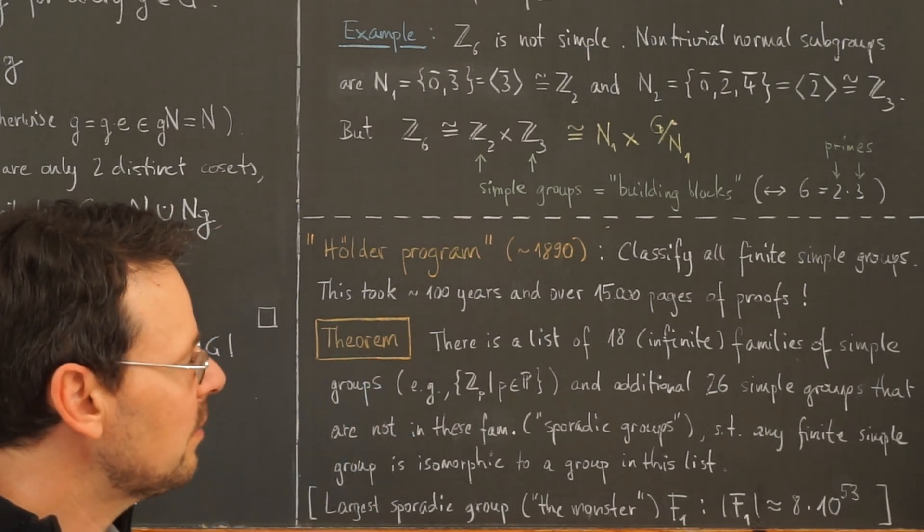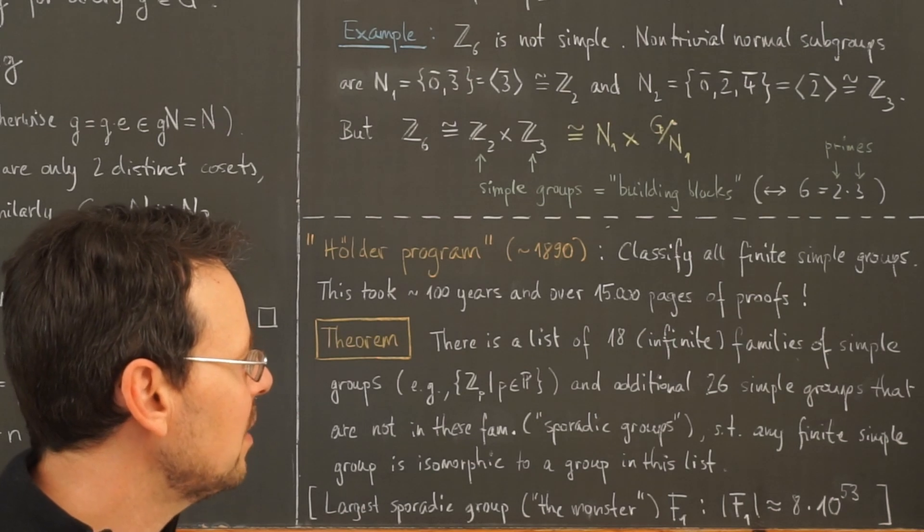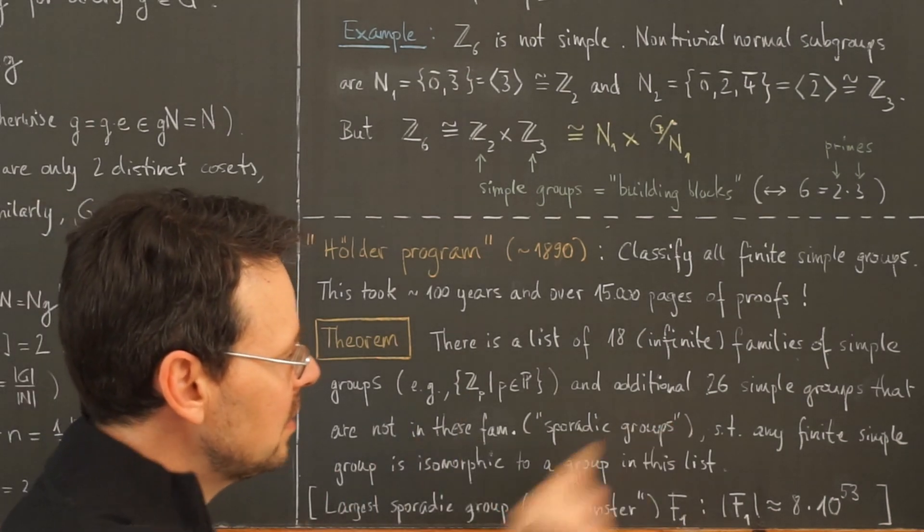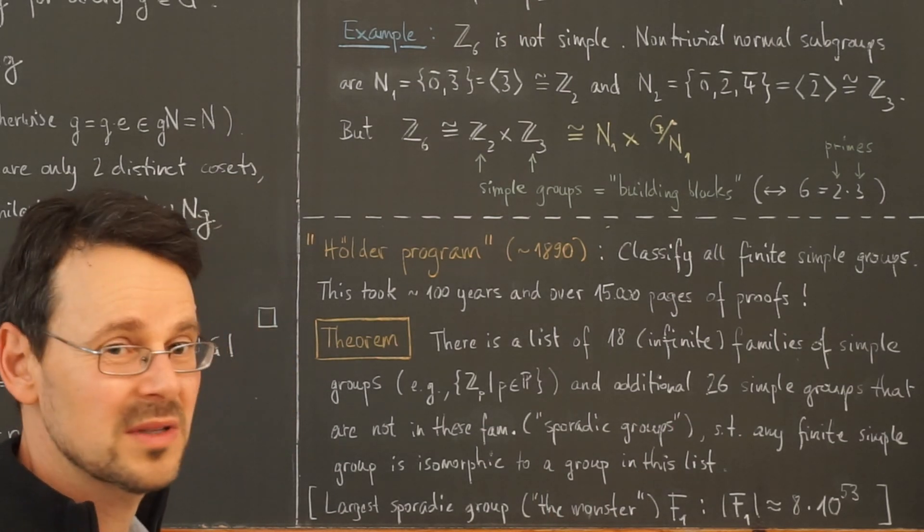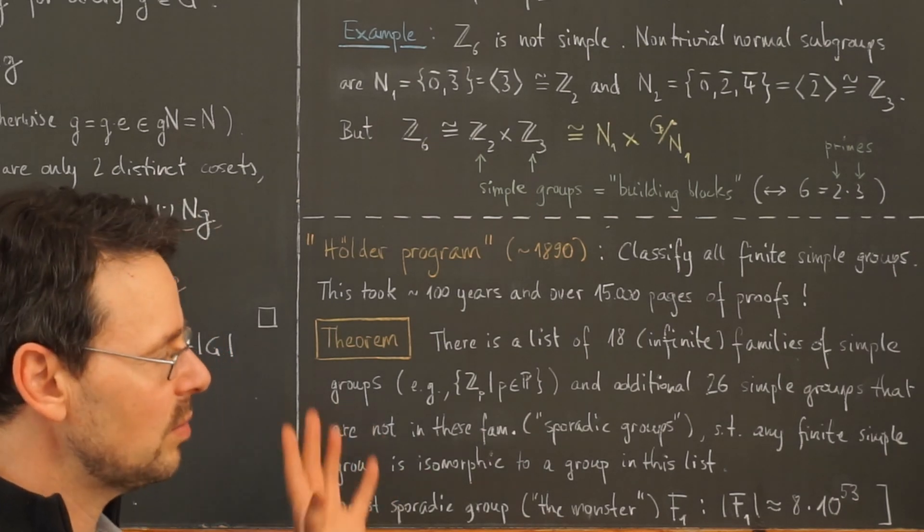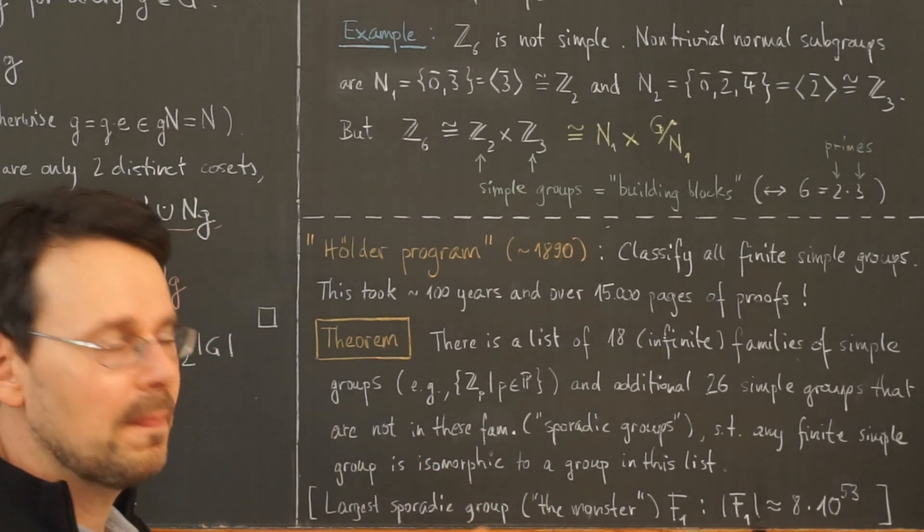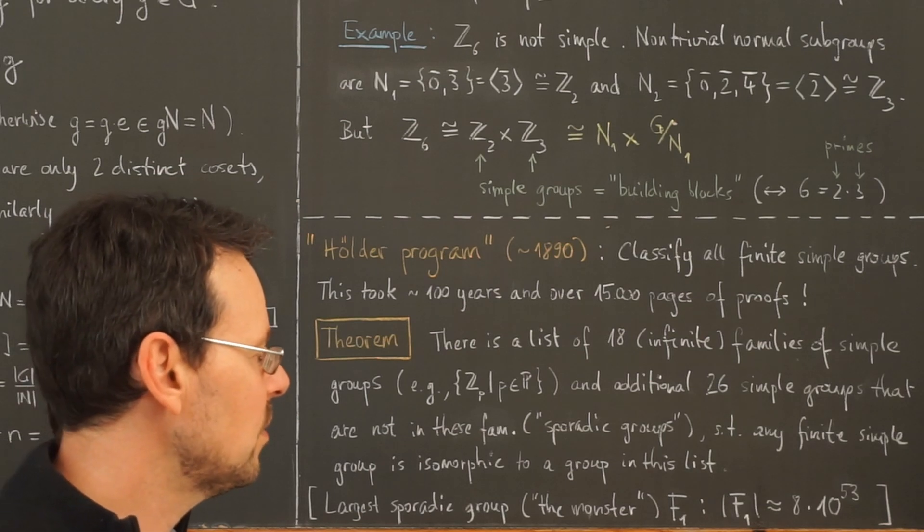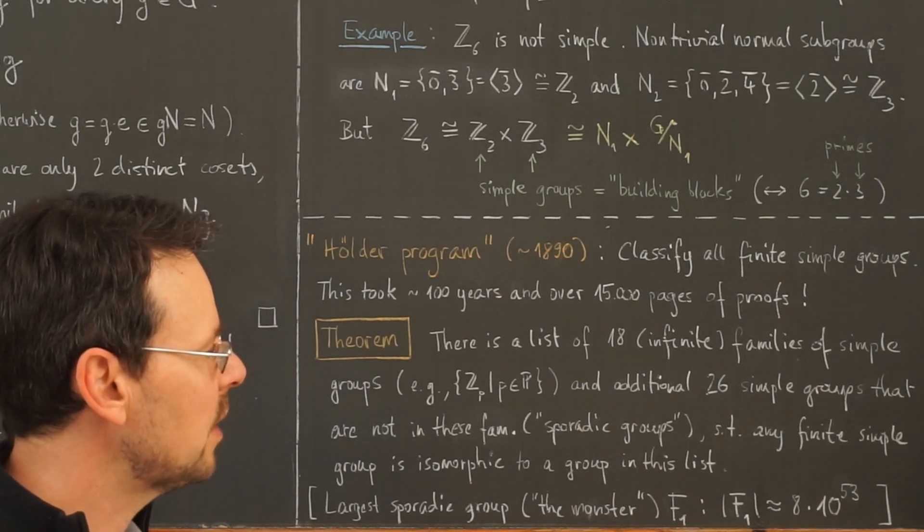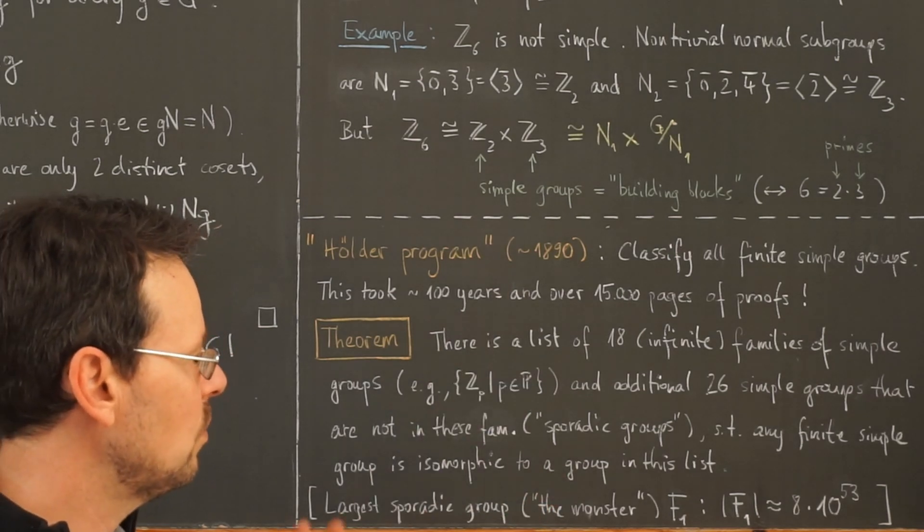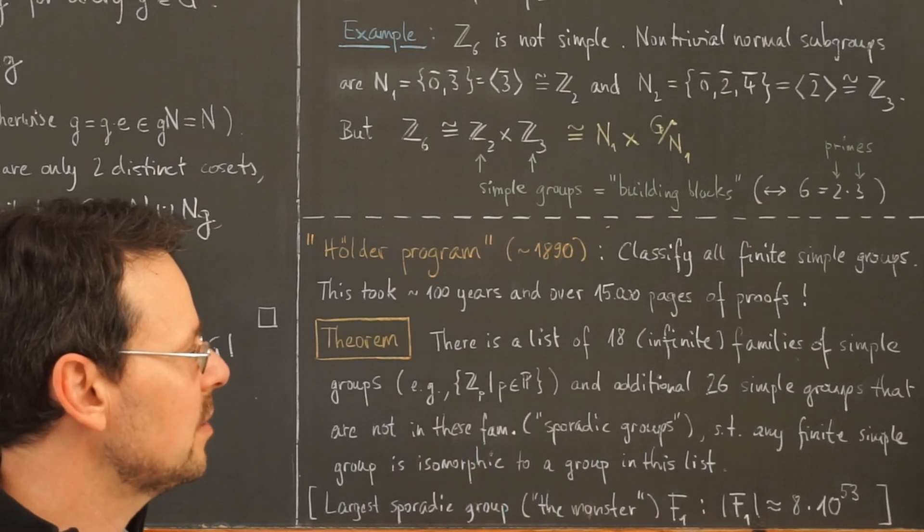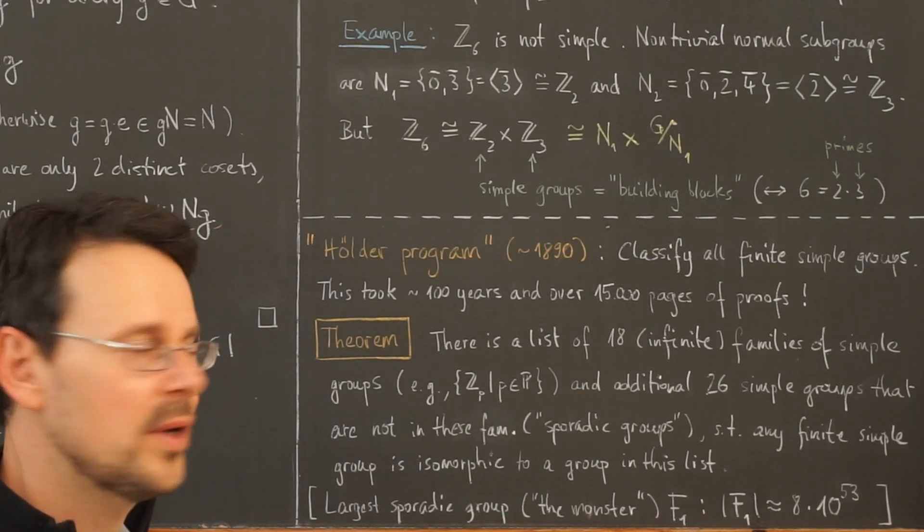So it's very, very hard mathematics. And in the construction of some of these sporadic groups, computers are involved. So some mathematicians say this is no complete proof because it involved using computers. Be that as it may, I think most group theorists are convinced that this is true and accept the proof that all the finite simple groups are known today.